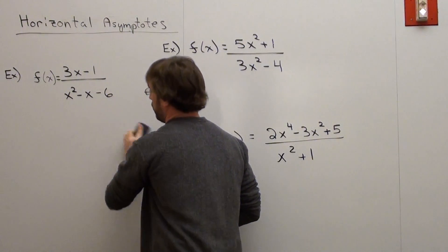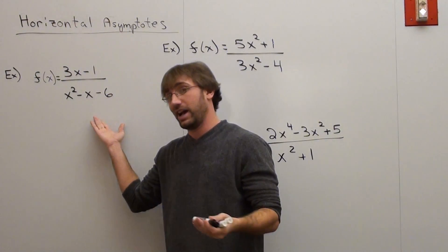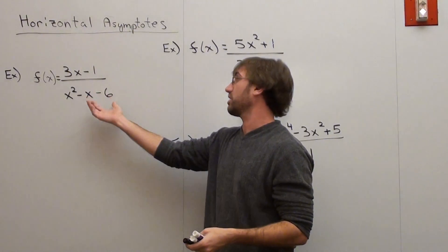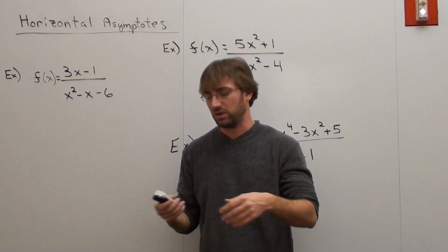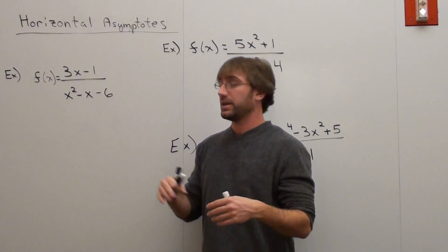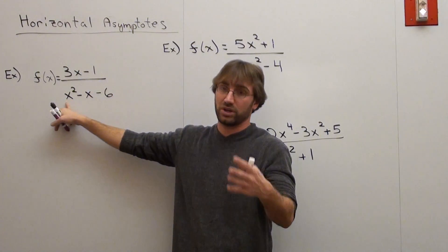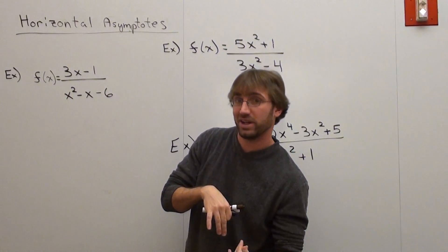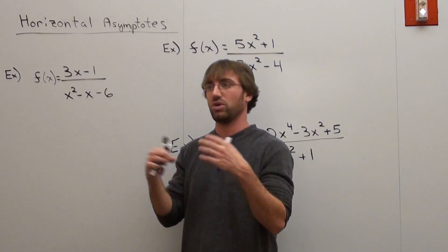Here's what you basically have to know: if the numerator has a lower degree than the denominator, then the horizontal asymptote is zero. For example, this one has a degree of one and this one has a degree of two. Since the numerator has a lower degree than the denominator, it has a horizontal asymptote of zero. That's always the case.